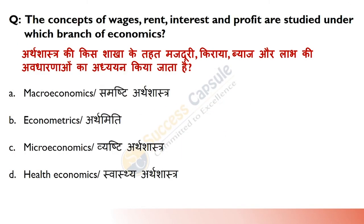Shift 3 first question: The concepts of wages, rent, interest and profit are studied under which branch of economics? Answer is C — Microeconomics. Microeconomics focuses on actions of individual agents within the economy like households, workers and businesses, whereas macroeconomics looks at the economy as a whole. You can see that in one day, two questions have been asked on microeconomics.